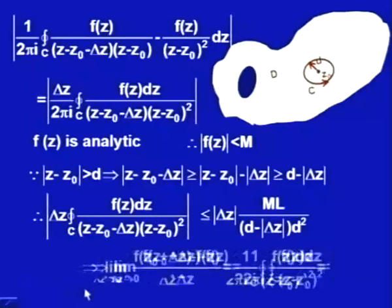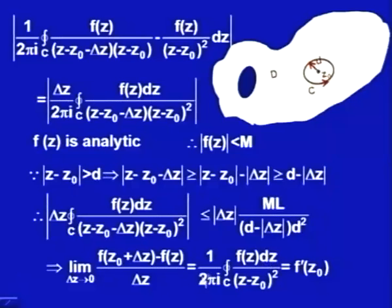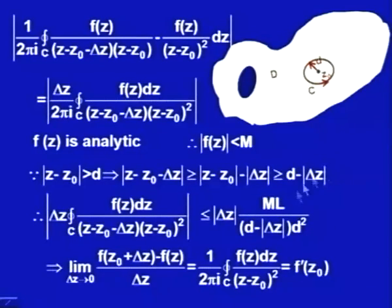By the definition of differentiation, the limit of [f(z₀ + Δz) − f(z₀)]/Δz is f'(z₀), and we have proved that f'(z₀) = (1/2πi) ∫_C f(z)/(z − z₀)² dz. So from the Cauchy integral formula, if f is analytic in domain D, then f' exists and is given by this integral formula.